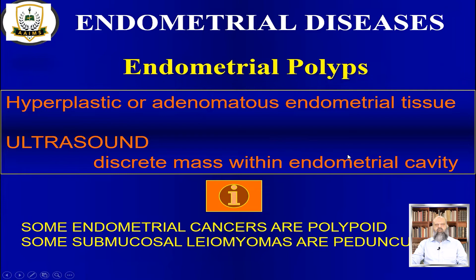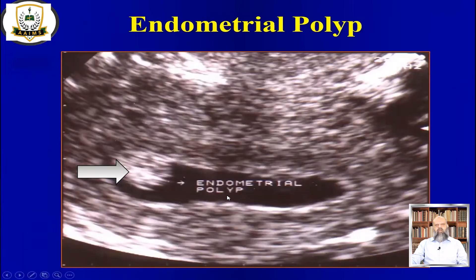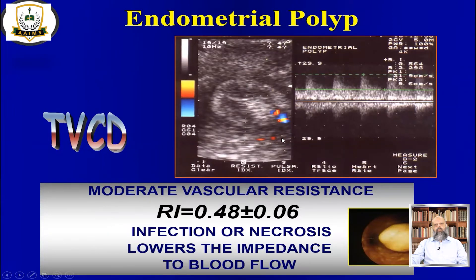Another important disease of the endometrium is endometrial polyps — hyperplastic or adenomatous endometrial tissues. On ultrasound we get a discrete mass within the endometrial cavity. Some endometrial cancers and polypoids are pedunculated. Here we can see the endometrial cavity with some fluid inside and a polyp lying near the fundus. Using color Doppler with spectral Doppler along the polyp, the moderate vascular resistance is about 0.48 ± 0.06, but infection or necrosis can influence blood flow. In this case it is 0.56, a slightly higher resistive index due to the polyp.